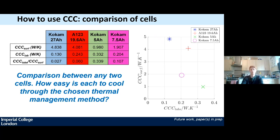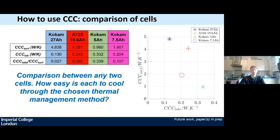The cell cooling coefficient can also be used to quickly compare lots of different cells. Any cell from any manufacturer can be included on a graph plotting surface cell cooling coefficient on the vertical axis and CCC tabs on the horizontal axis. From this we can approximate how surface cooling and tab cooling compare. In the future, we hope to use a graph of this concept to define which thermal management approach would be best. Experiments are ongoing, but we're not there just yet.